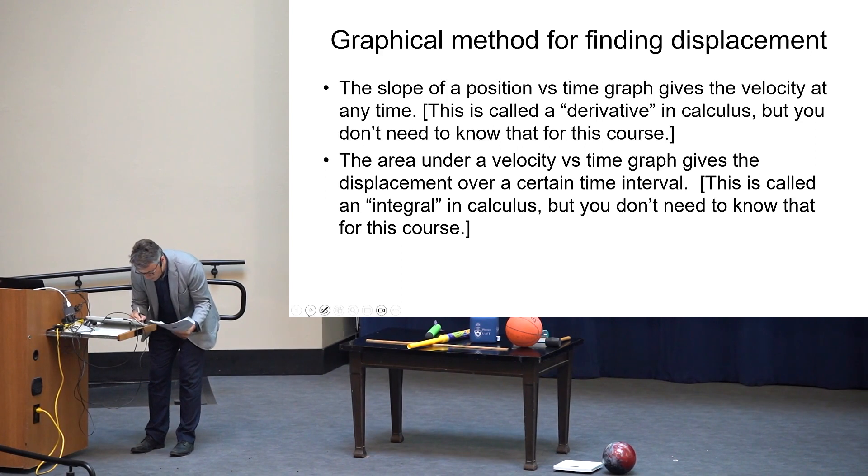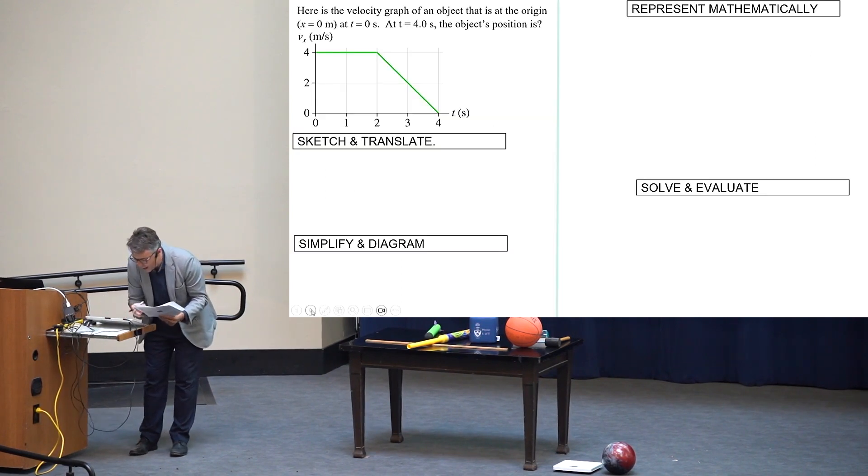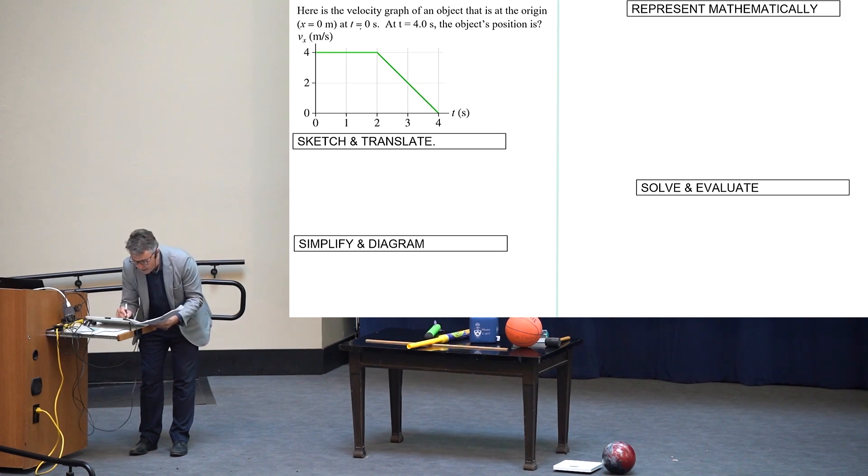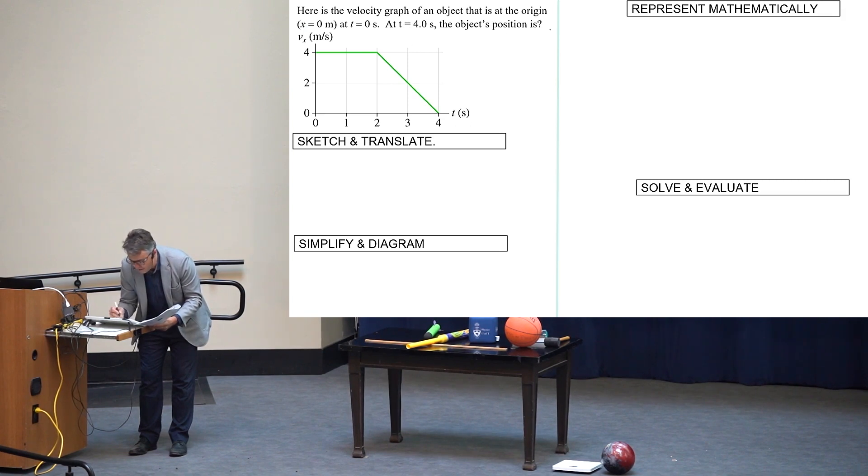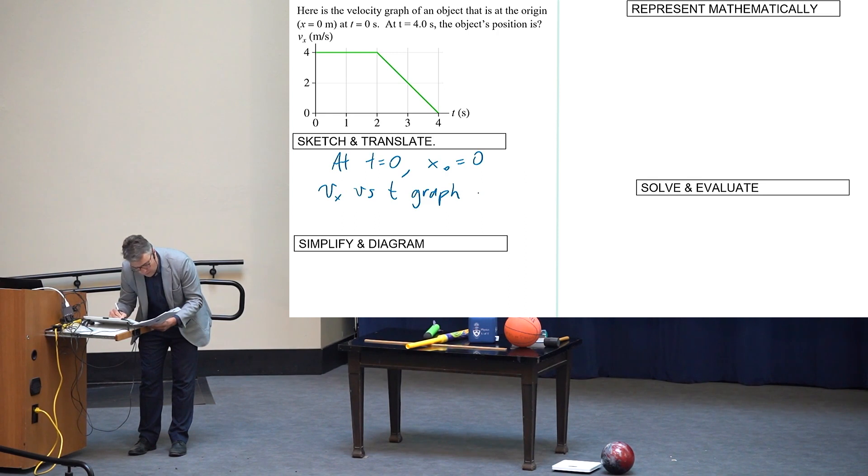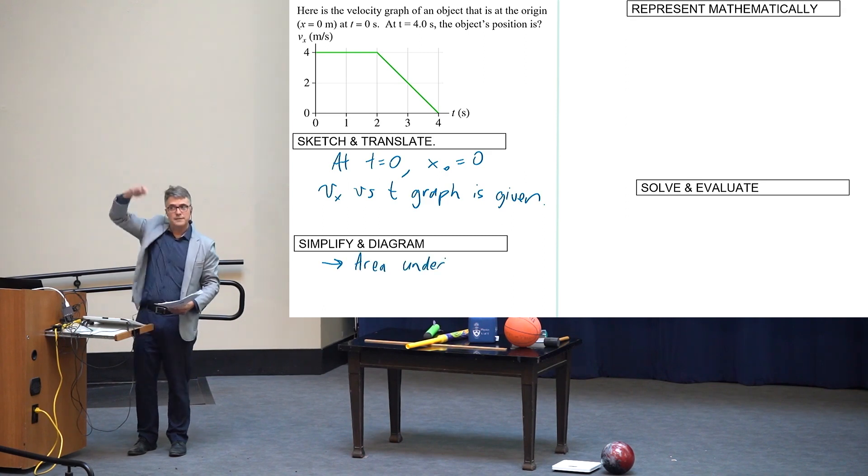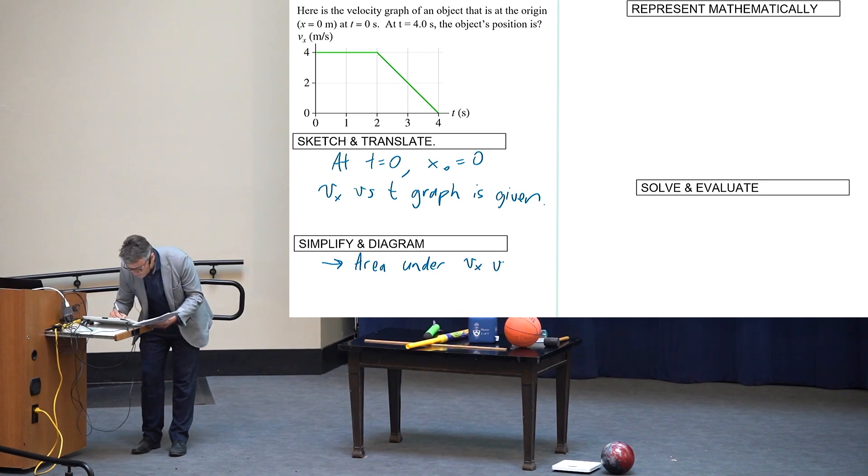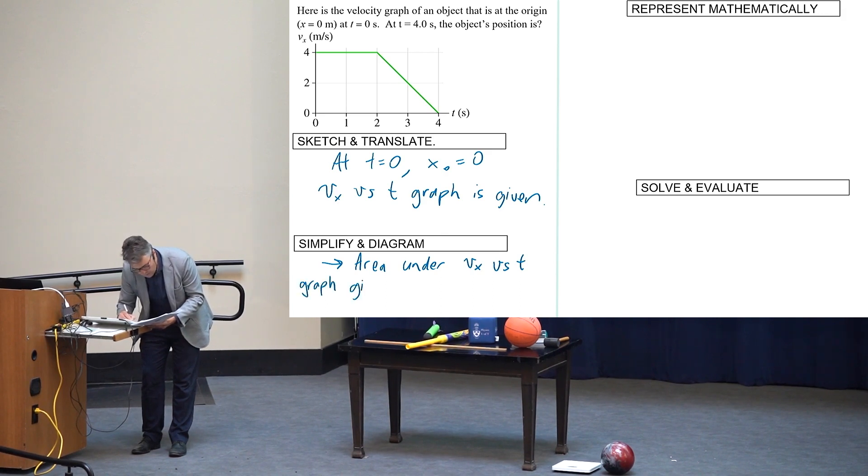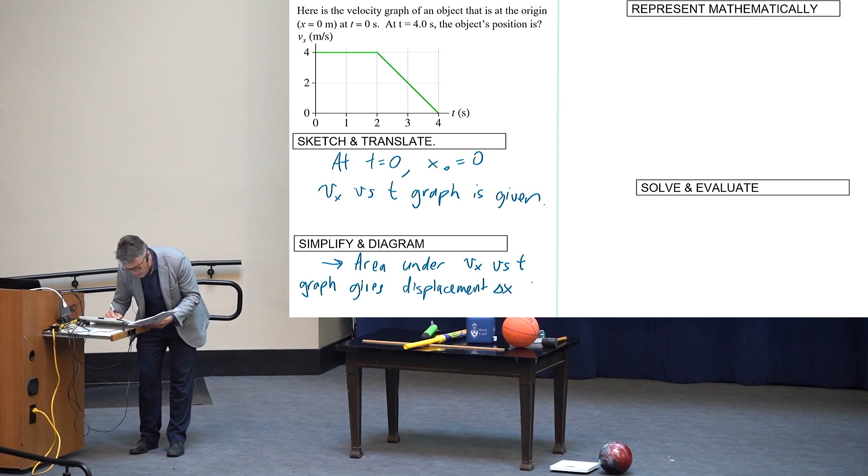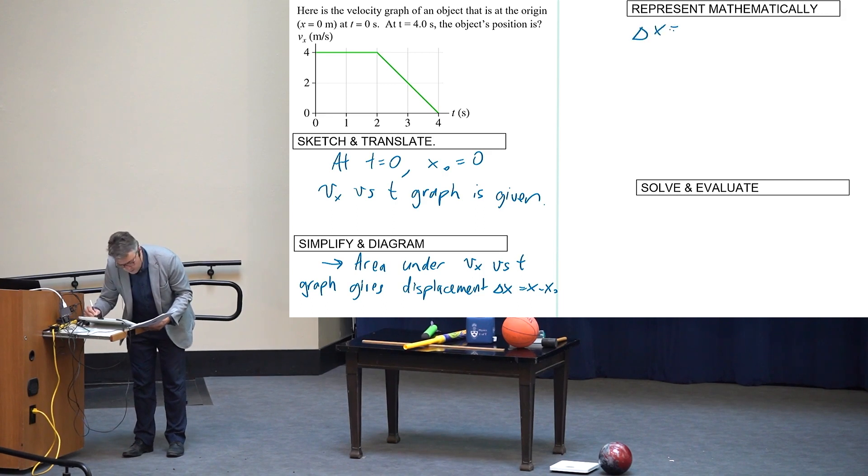The area under a velocity versus time curve gives you the displacement for the time interval that you're finding the area for. So let's do an example of doing that. Here is the velocity graph of an object that is at the origin, x equals zero meters, at t equals zero seconds. At t equals four seconds, what is the object's position?